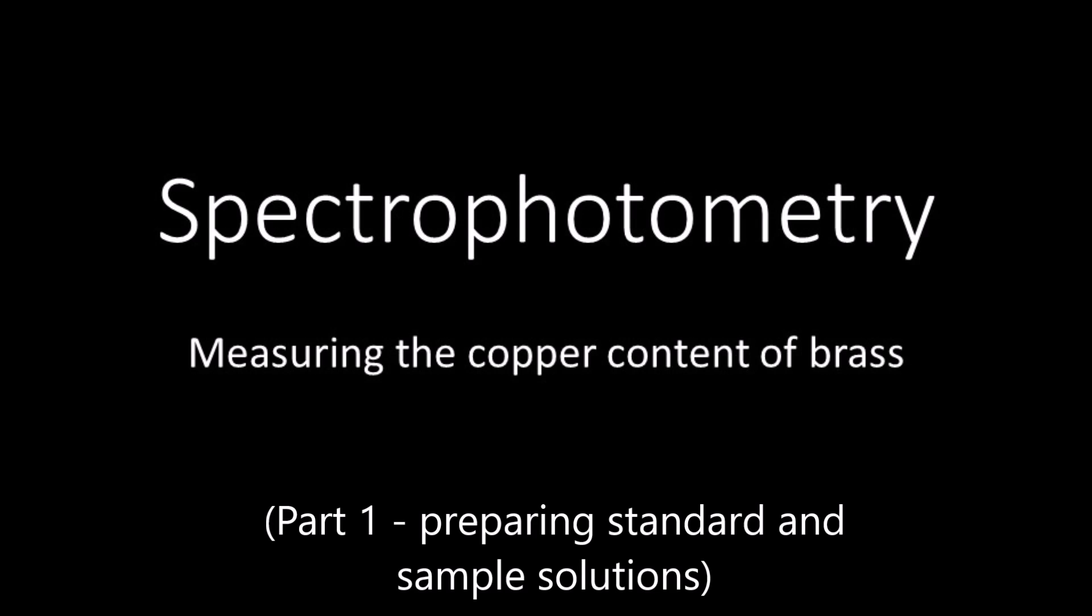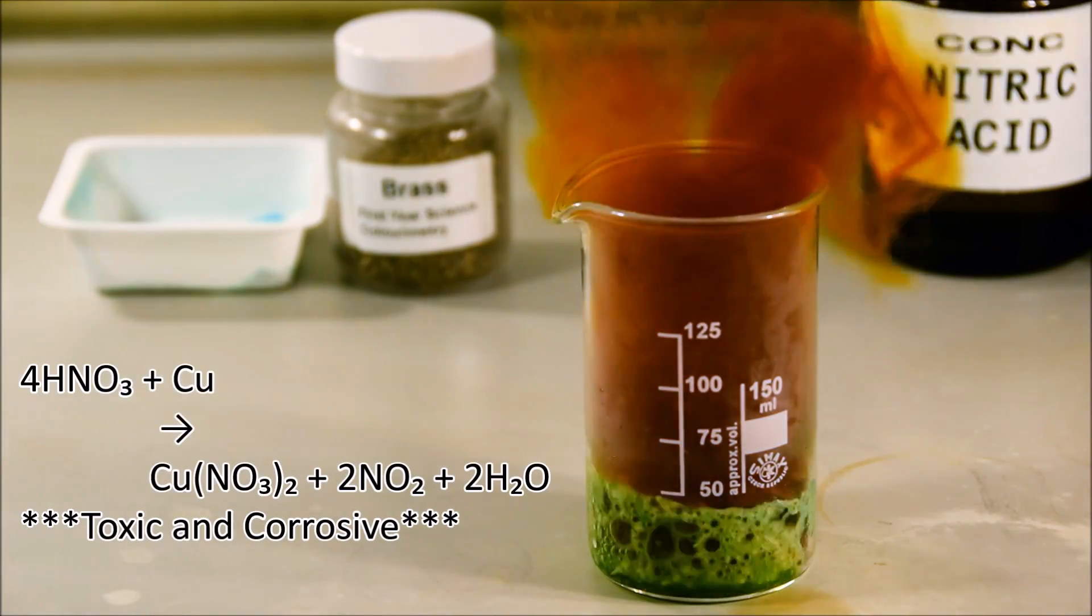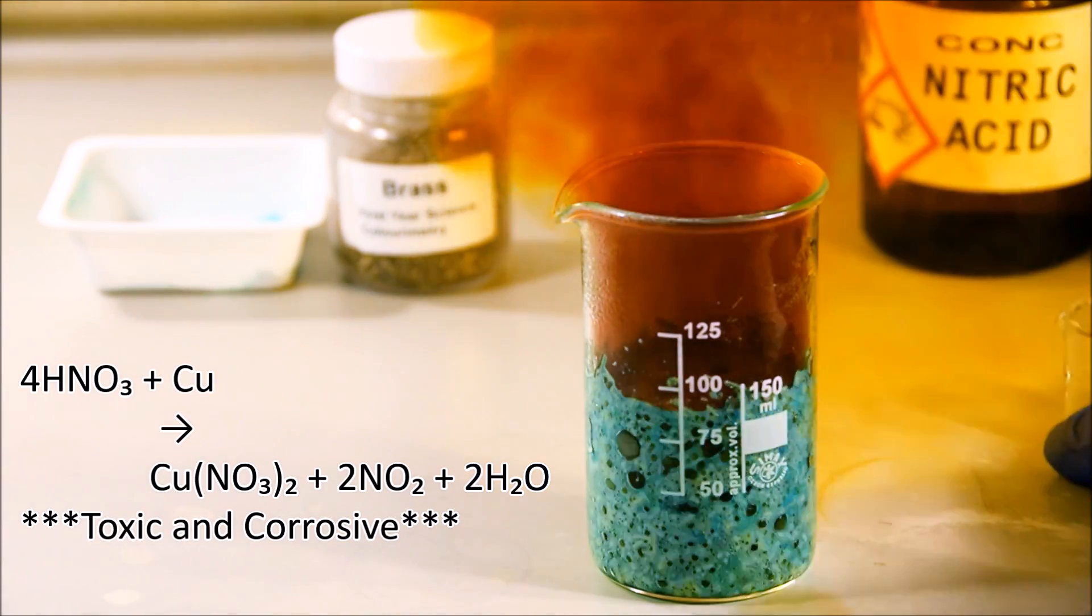OK, so today we're going to measure the copper content of brass using spectrophotometry. Before we do that, we have to get our copper into solution. We do this by dissolving it in nitric acid.